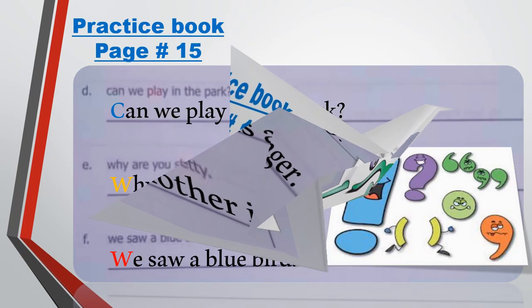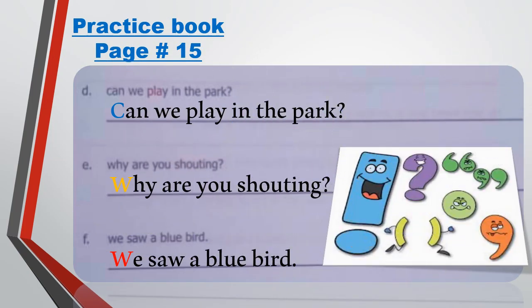Now open your screen. The next sentence is: 'Can we play in the park?' C will be capital and we put a question mark at the end. Next sentence: 'Why are you shouting?' Y will be capital and a question mark is at the end. The last sentence is: 'We saw a blue bird.' W will be capital and a full stop is at the end. Use colored pencils to rewrite the sentences.